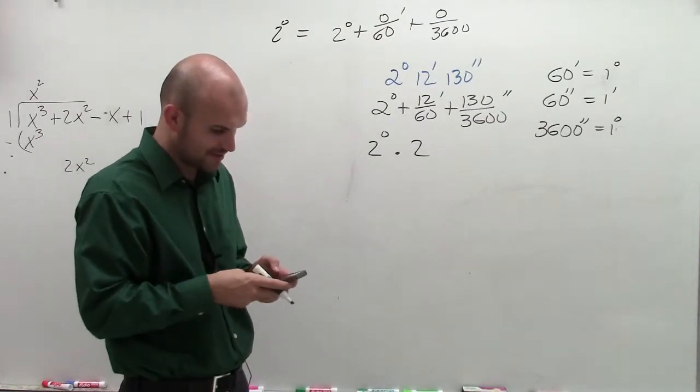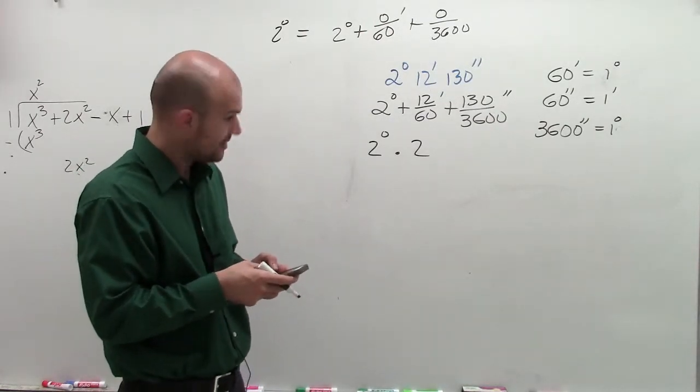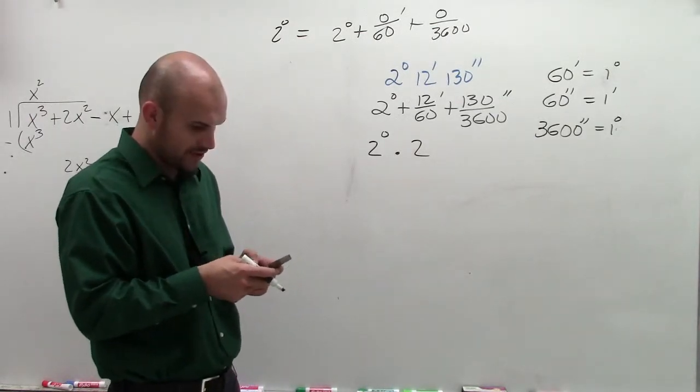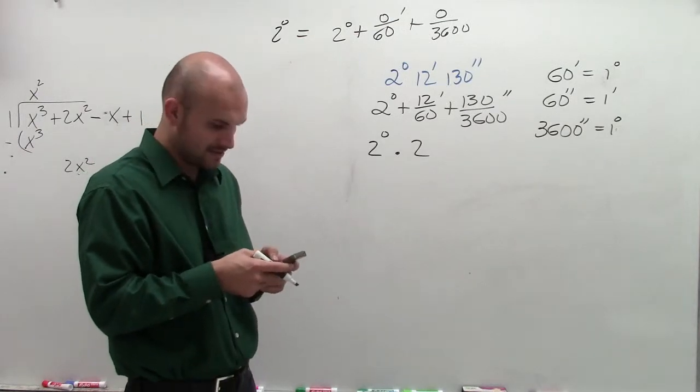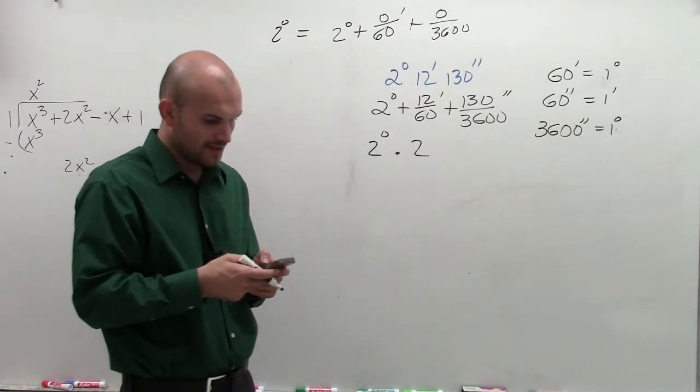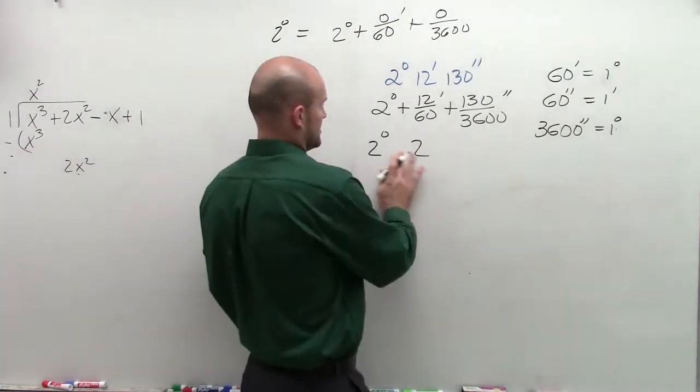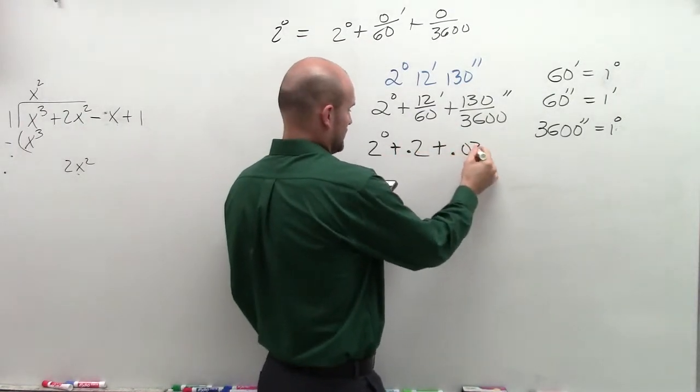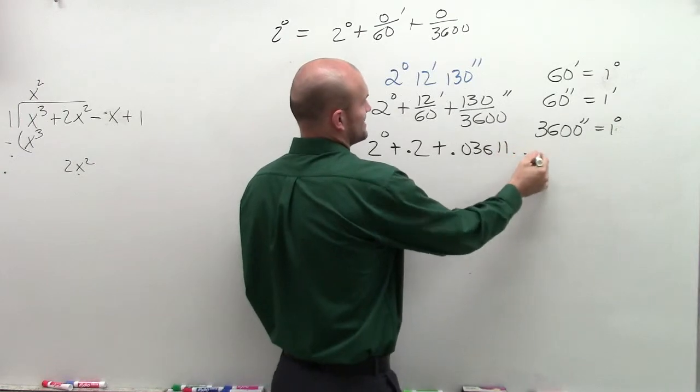Then we look at, I am going to have to pull up my calculator here for the next one. And I have 130 divided by 3,600 is going to equal, sorry, it's plus 0.2 plus 0.03611 dot, dot, dot.